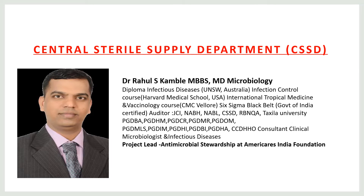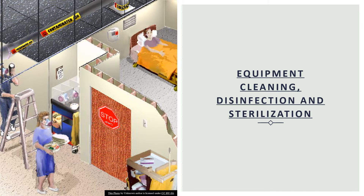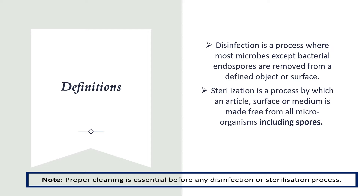Let's learn about the Central Service Supply Department. Here we are learning about equipment cleaning, disinfection and sterilization. Disinfection is a process where most microbes except bacterial spores are removed from a definite object or surface. Sterilization is a process by which an article, surface, or medium is made free from all microorganisms including spores.